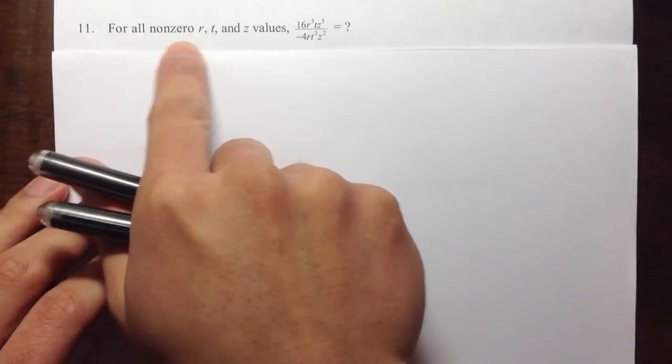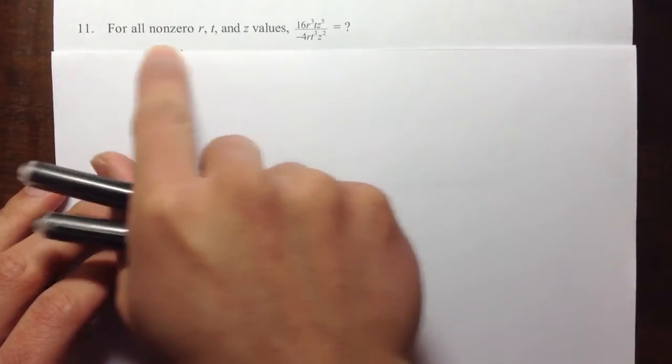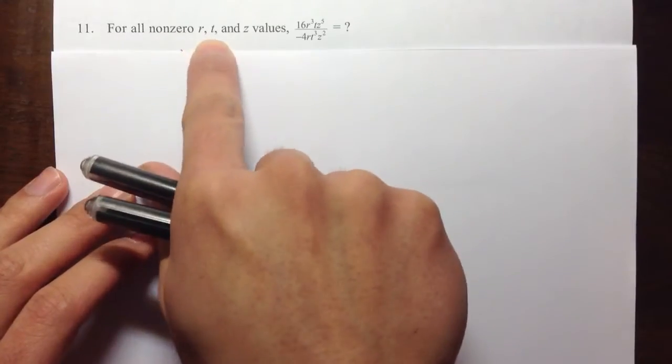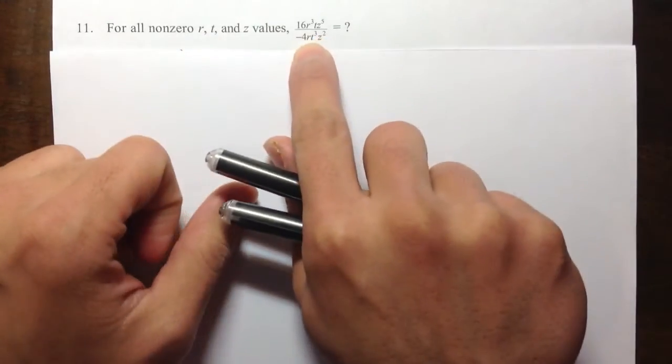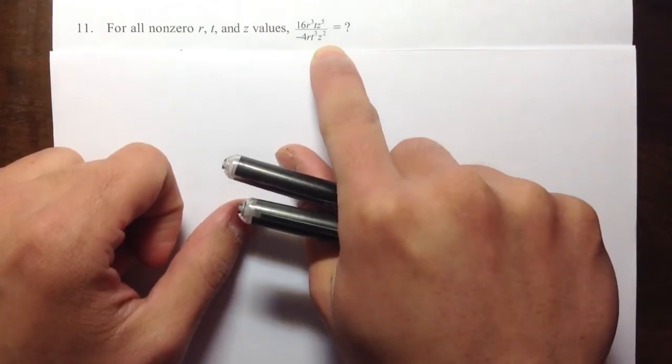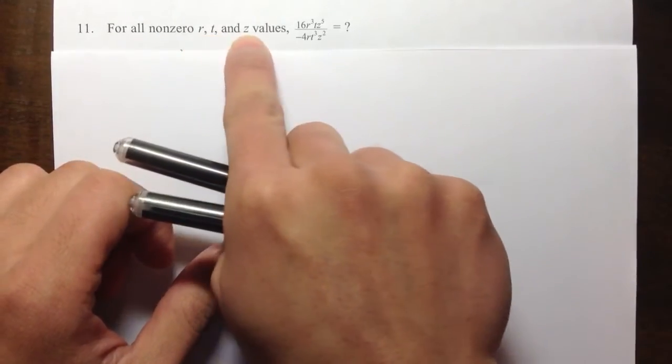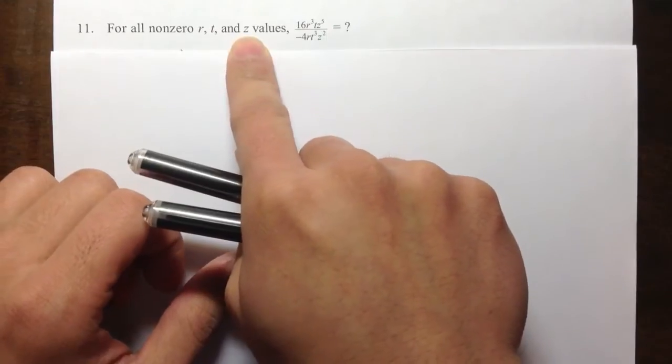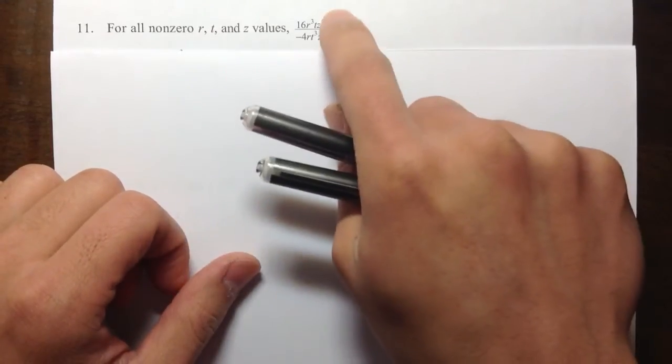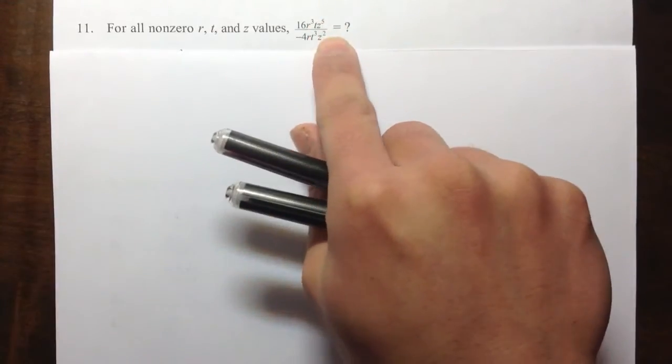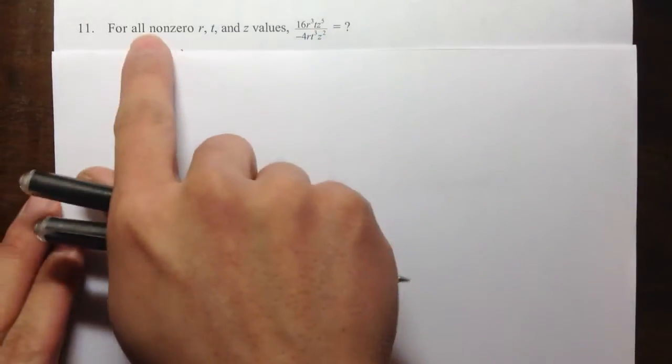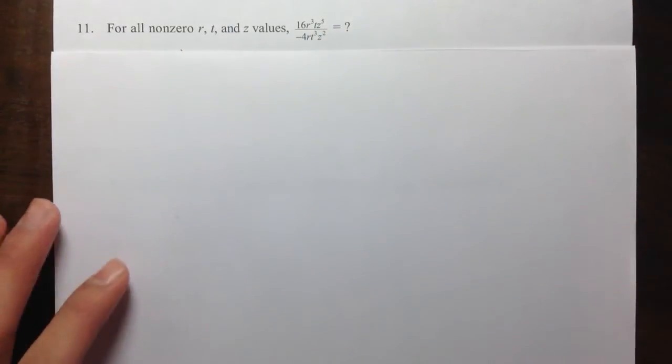It says, for all nonzero r, t, and z. The reason they say nonzero r, t, and z is because notice that they have r, t, and z on the denominator. They just want to make sure that none of these represent a zero. Otherwise, you will be doing something over zero, which is undefined. But don't let this bother you too much. So let's get to work.